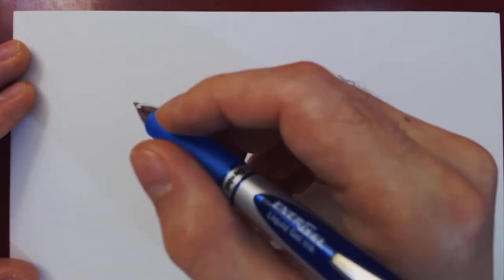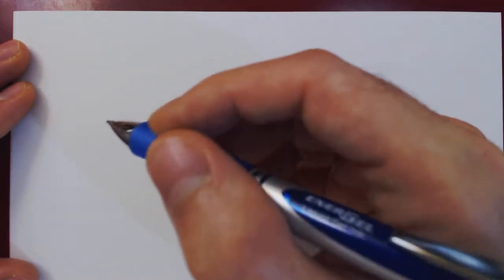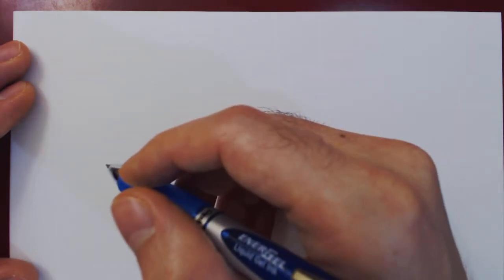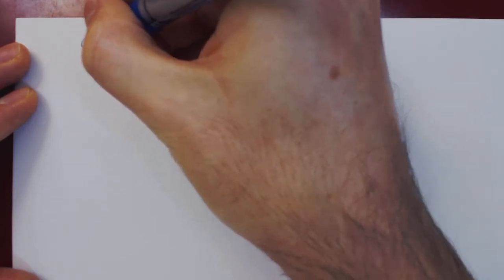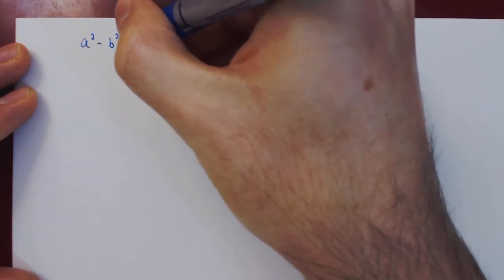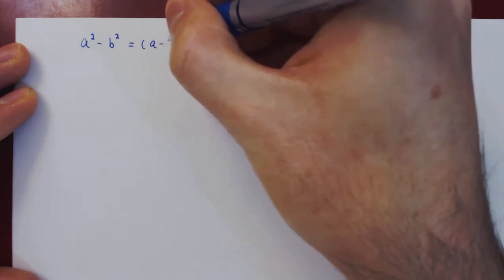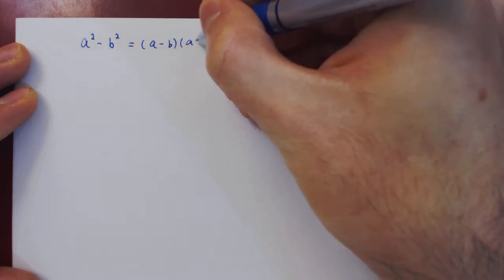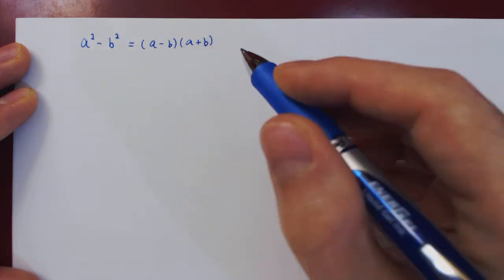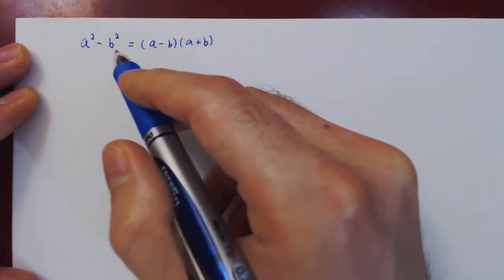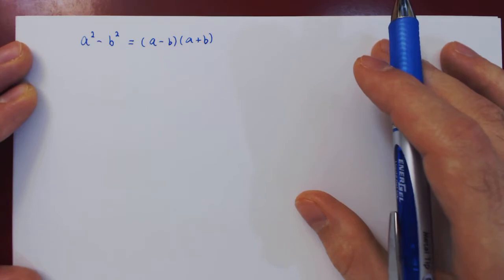Okay, so in this video, we will give a slightly more involved example of factoring using the idea of a difference of squares. So recall that, in general, a squared minus b squared factors as a minus b times a plus b. And this is, of course, true for any choice of a and any choice of b.